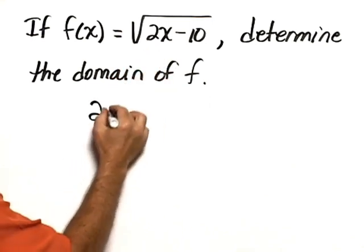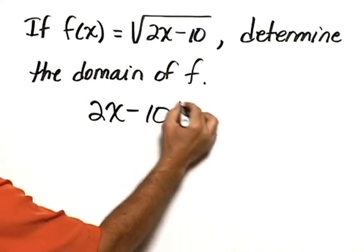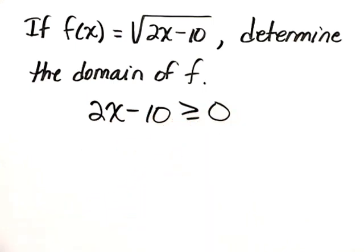In other words, 2x minus 10 must be greater than or equal to 0.